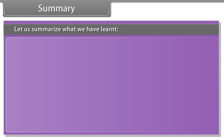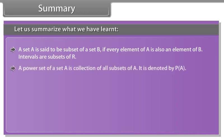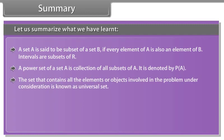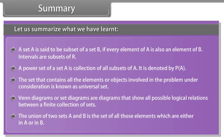Summary. Let us summarize what we have learned. A set A is said to be subset of a set B if every element of A is also an element of B. Intervals are subsets of R. A power set of a set A is collection of all subsets of A. It is denoted by P(A). The set that contains all the elements or objects involved in the problem under consideration is known as universal set. Venn diagrams are diagrams that show all possible logical relations between a finite collection of sets. The union of two sets A and B is the set of all those elements which are either in A or in B.